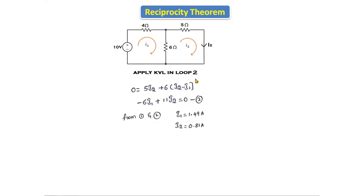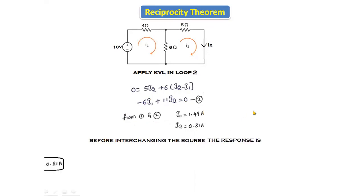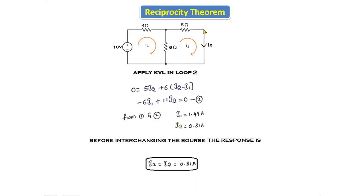Solving equations one and two using a calculator, we get I1 equals 1.49 amperes and I2 equals 0.81 amperes. Before interchanging the source, the response Ix is the current flowing through this branch, which is I2. Therefore, Ix equals I2 equals 0.81 amperes. So before interchanging the source, the response is 0.81 amperes.